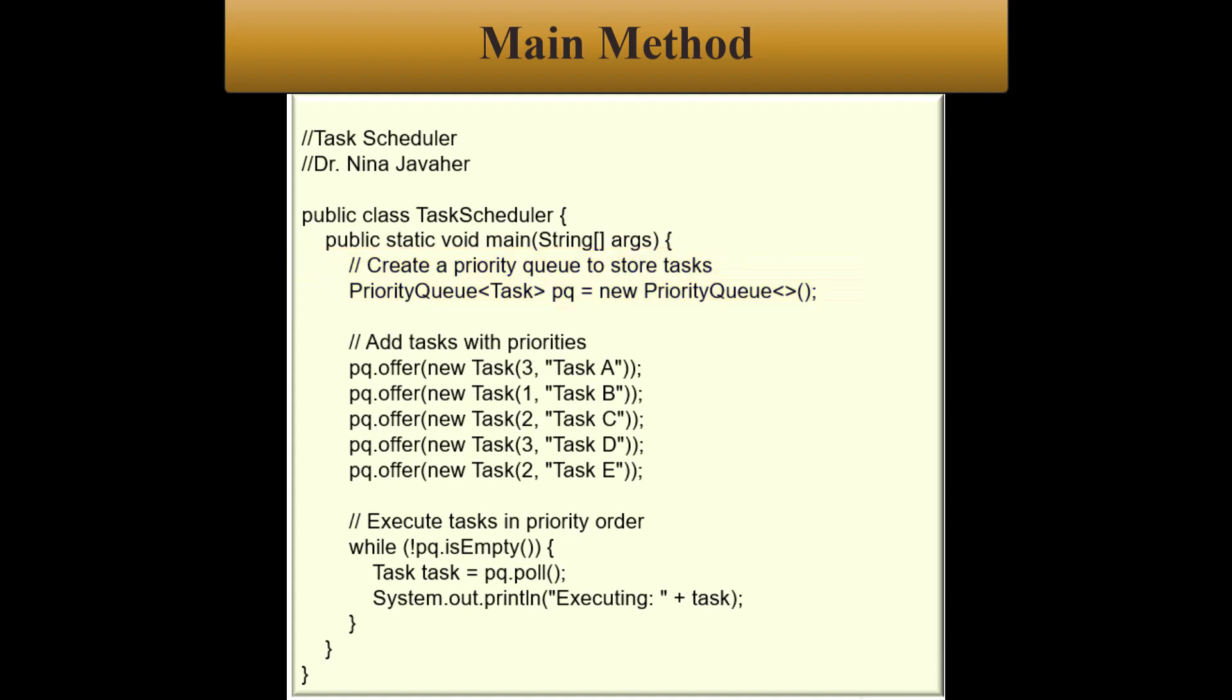And now for the pq.offer(new Task...) lines, these are going to add tasks to the priority queue. Each task is created using the Task constructor and added to the queue using the offer method. The tasks are added with different priorities, like 1, 2, 3, whatever the priority is.